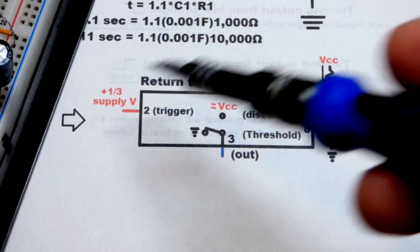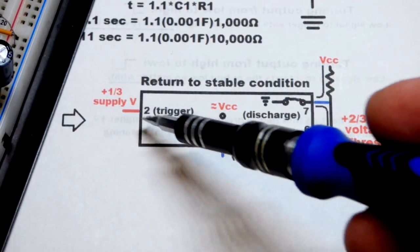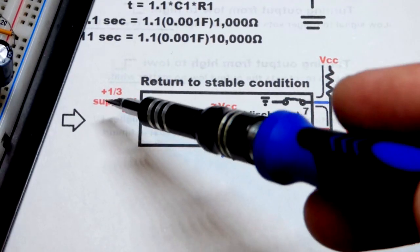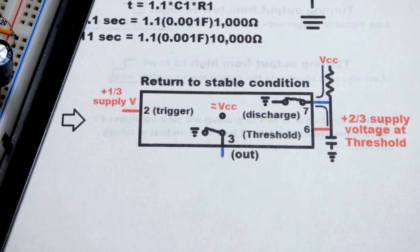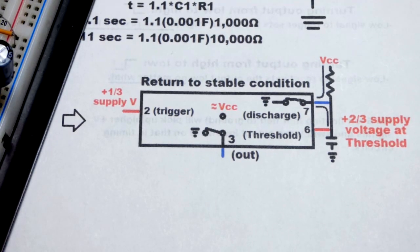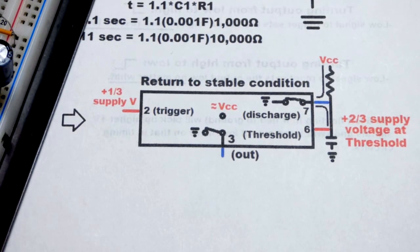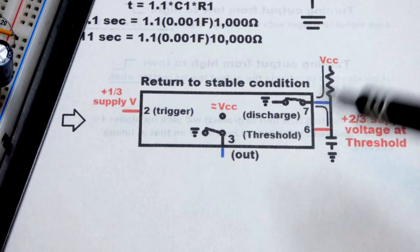That's where it's going to hold again. As long as the power supply voltage to the trigger pin is above one third of the supply, it's going to hold the output low. So it's just waiting for that low trigger to start the whole process again. So that's steady.